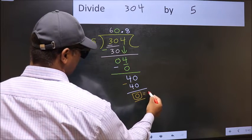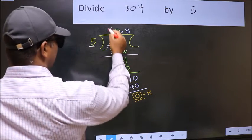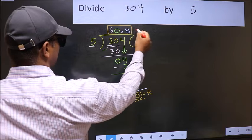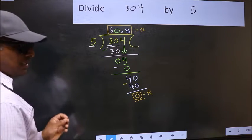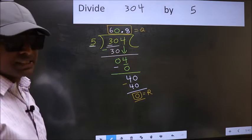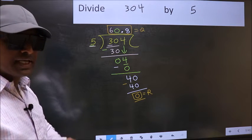This is our remainder, and this is our quotient. Did you understand where the mistake happens? You should not do that mistake.